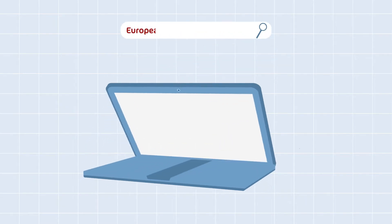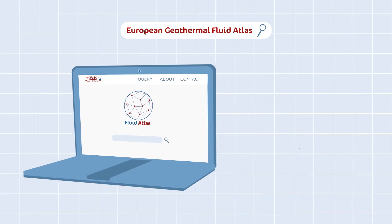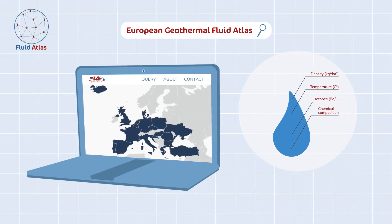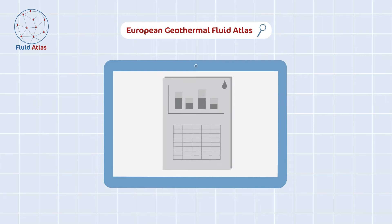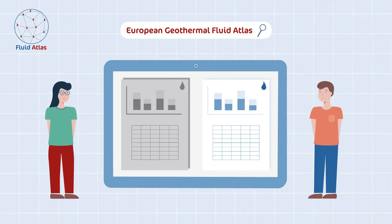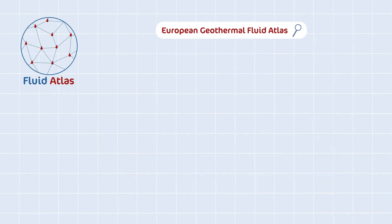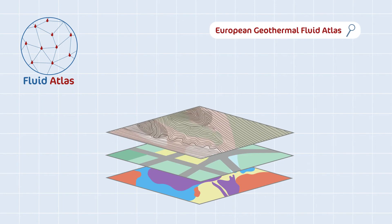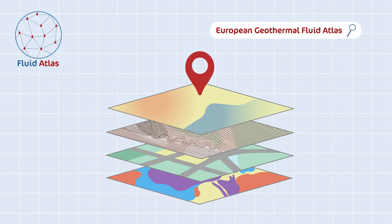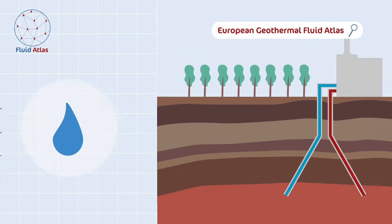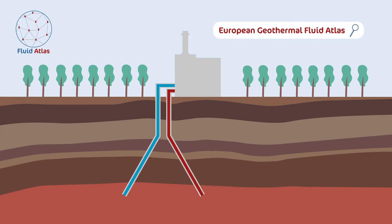The Reflect European Fluid Atlas is an online platform providing information on geothermal fluid properties from more than 20 European countries. Formerly existing and newly measured data are publicly available to all geothermal stakeholders. The layers provide point feature information presented on a base map, including geography, geology and depth range, as well as physical and chemical properties of fluids. Data of wells can also be consulted.